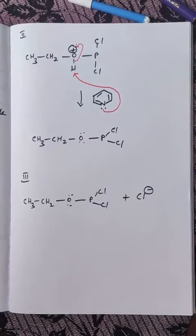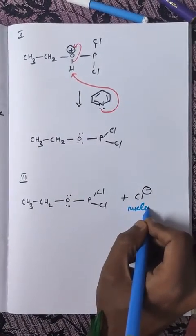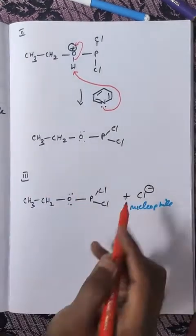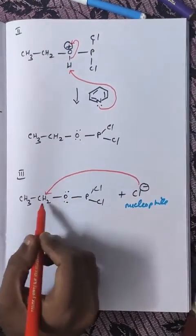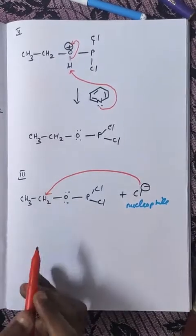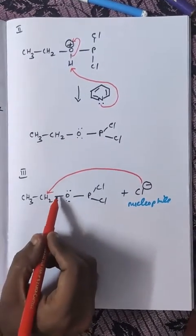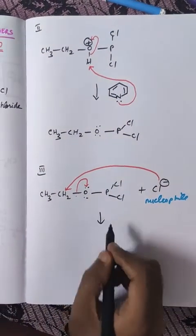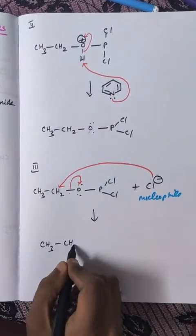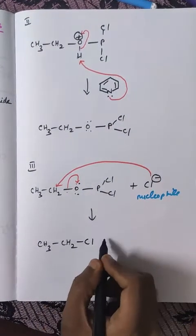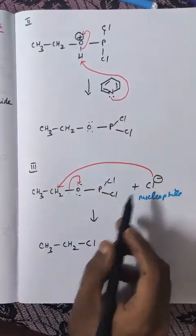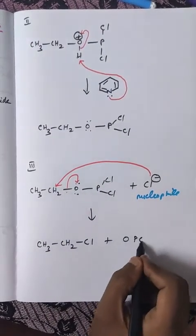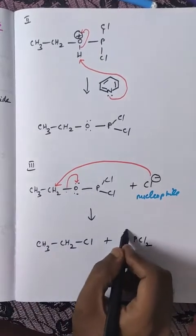The nucleophile will attack the carbon attached to the oxygen atom. As a result, this bond will shift over the oxygen as a negative charge. So what we will be getting? CH3-CH2-Cl plus O-PCl2 with negative charge.